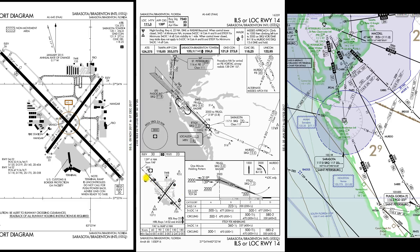The airport layout shows us a displaced threshold and the approach lighting system we have. We do have PAPIs, and they're going to be on the left. They're shaded and dark, so that means they are pilot-controlled — when we get there at 2 a.m. and the tower's closed, we'll have to turn them on manually. We have the tower depicted on our plan view with a height of 135 feet, since that's an obstacle to us. Also the airport beacon is located on the southwestern corner of the airport. We have REIL for runway 22, and HIRL for runways 14, 32, and 4/22, and they are pilot-controlled.